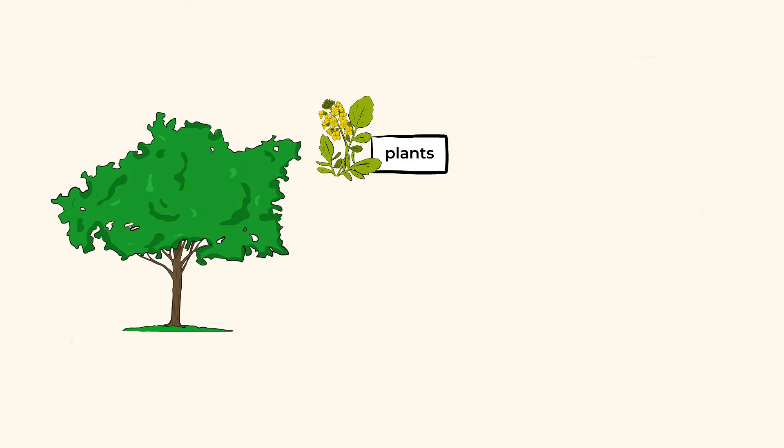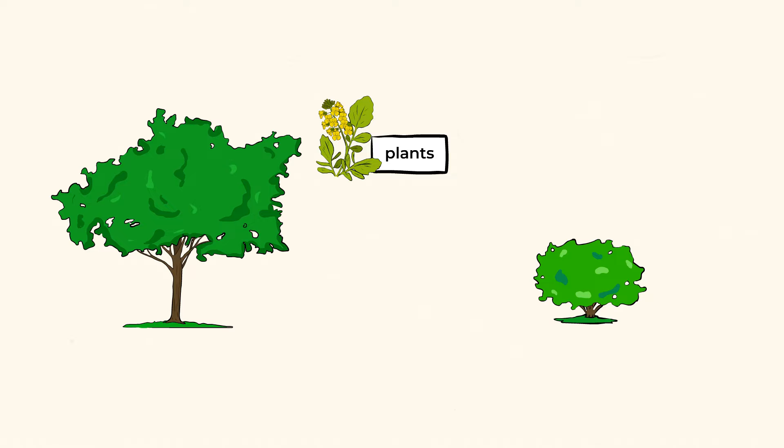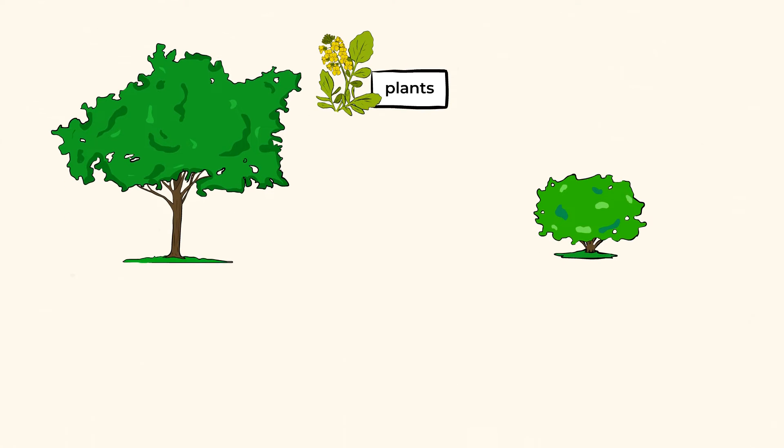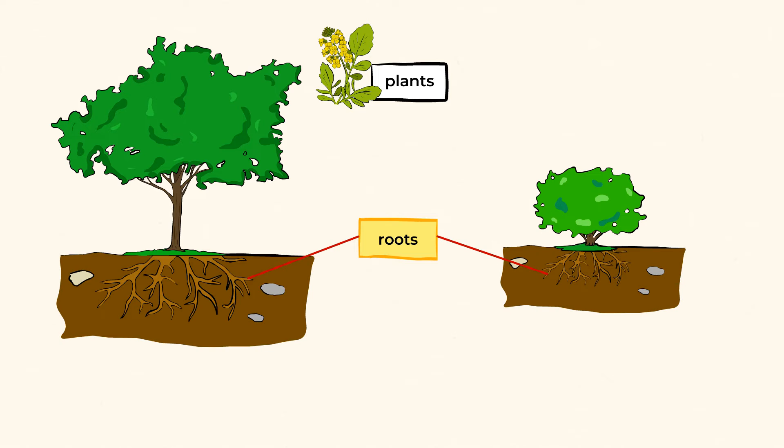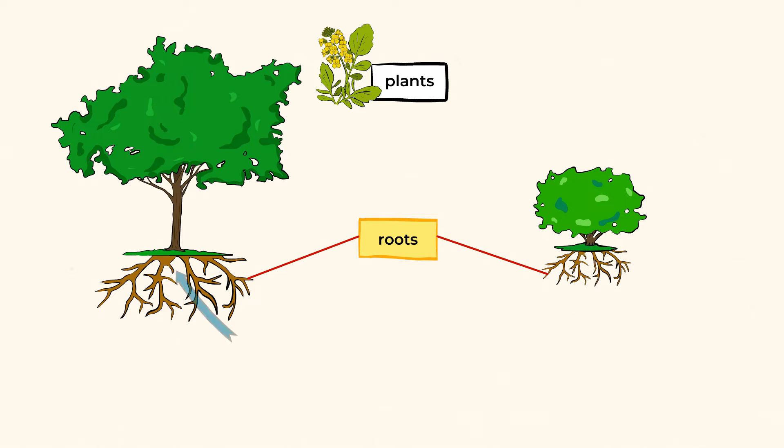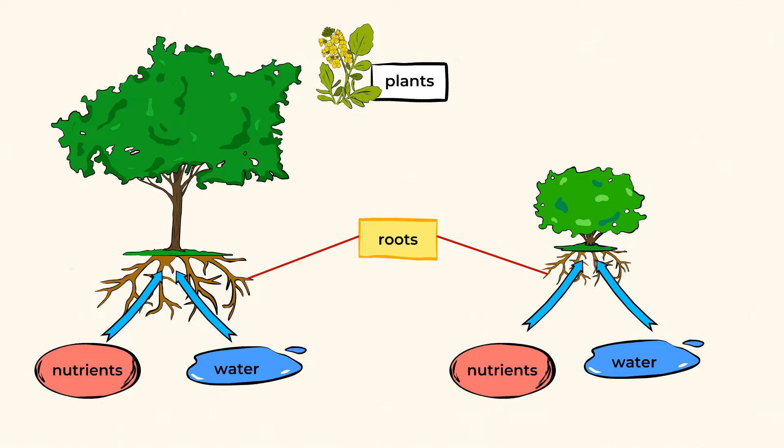Most plants share some basic parts that help them operate. Take a closer look at the screen. The majority of plants have roots that anchor the plant to the ground. It's these anchors that help plants take in water and nutrients from the soil.